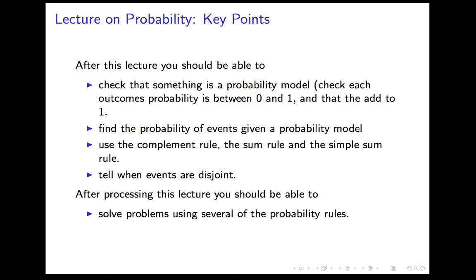So what should you be able to do now? First, you should be able to check that something is a probability model — verify all probabilities are between 0 and 1 and that they add up to 1. Second, given a probability model, you should be able to find the probability of events by adding up the probabilities of the outcomes that make it up. You should be able to use the complement rule, the sum rule, and the simple sum rule, and you should be able to tell when events are disjoint. After we do more examples, you should be able to solve problems requiring several probability rules applied in sequence.